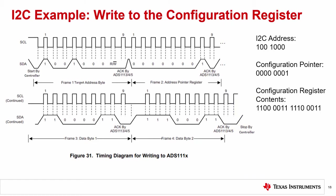Putting it all together, figure 31 now looks like this. Figure 31 in the datasheet is very useful when debugging communications. You could plot the I2C communication with an oscilloscope and compare this figure with the plot to debug any issues.